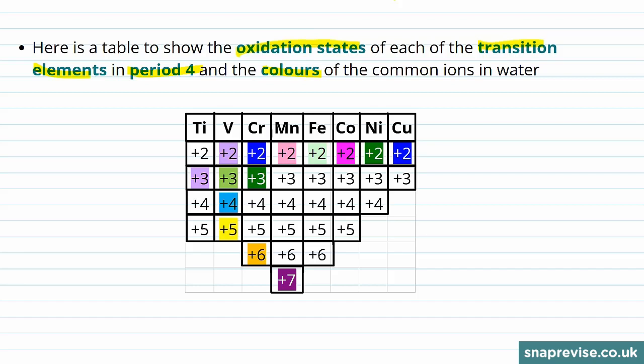You should already be familiar with some of these colors. For example, manganese 7+, which is in potassium permanganate, has a purple color. Copper 2+ in solution has a blue color. Iron 2+ has a pale green color. And chromium 6+, which is in dichromate, has an orange color. The rest of them you will come across at some point in the course.